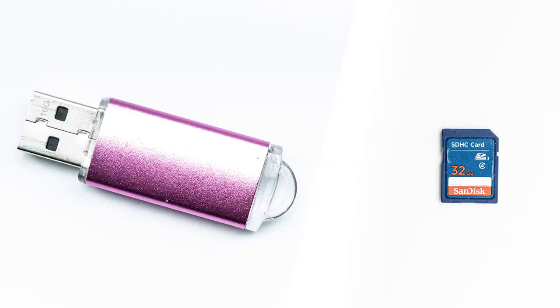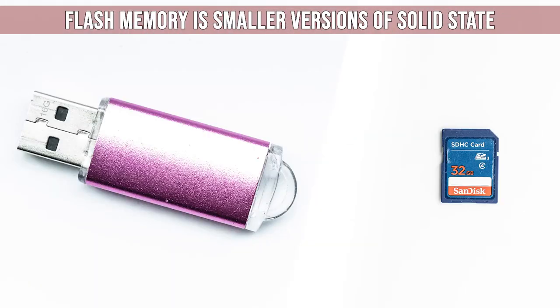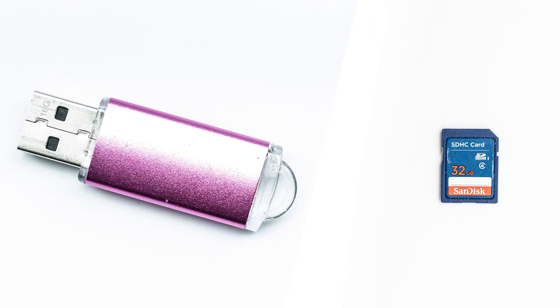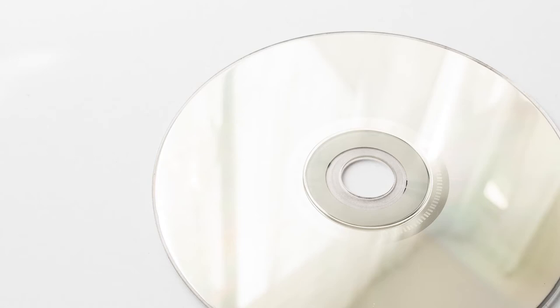Flash memory is just a smaller version of solid state. It's often used in embedded systems such as cameras. Optical storage is the correct name for CDs, DVDs and Blu-rays. These generally don't have very large capacity so they can't store a lot of data, so they're often used for backups. They're also quite small in terms of size and you can stack them on top of each other.